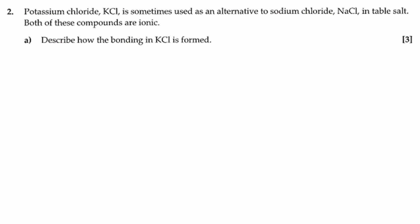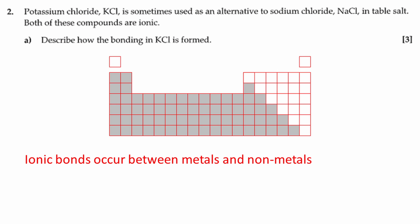Here's the first question. Describe how the bonding in KCl, potassium chloride, is formed. We are told here that potassium chloride is ionic. If you aren't sure what type of bonding is present, you can use the periodic table to check. Ionic bonds occur between metals and non-metals. The metals are shaded in grey on this diagram.